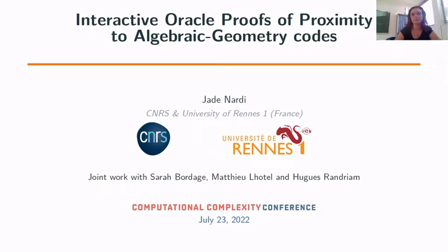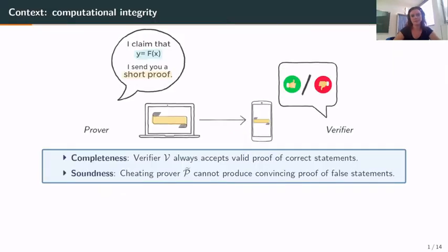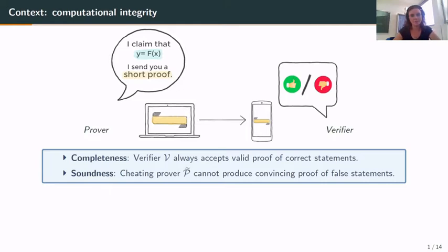First, some context. The context is computational integrity. Imagine that a computer runs a computation for a smartphone. The computer is much more powerful than a smartphone, and it runs a computation f on an input x and claims that y is the result. It also sends a short proof of this result, and the smartphone — the verifier — has to validate or not the computation from the prover.